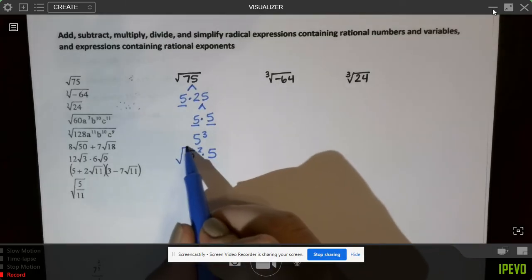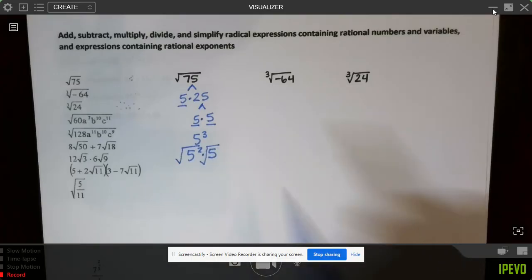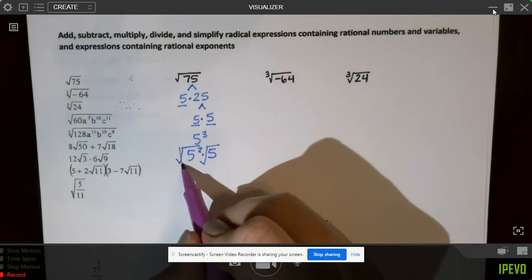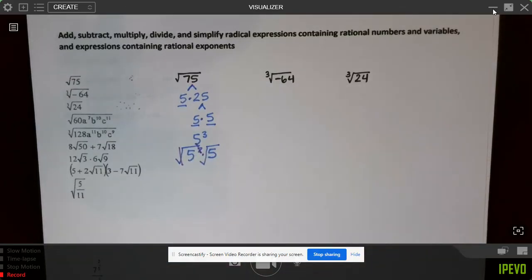what we're going to do is take the square root of those. Now, if you remember from class, a square and a square root are opposite inverse operations. They undo each other, kind of like multiplication and division undo each other.